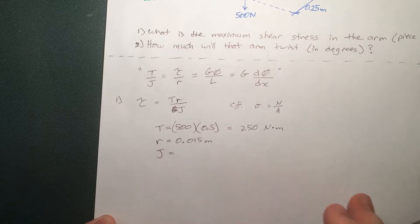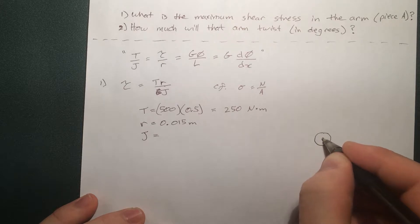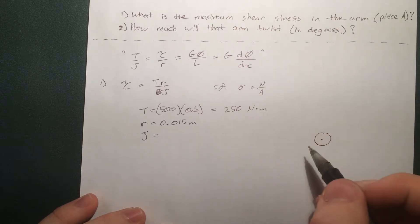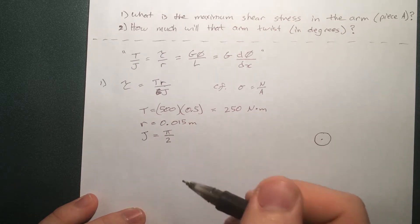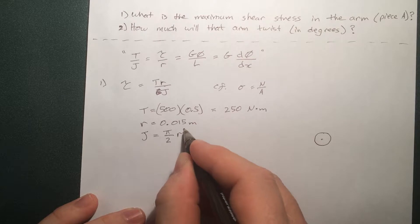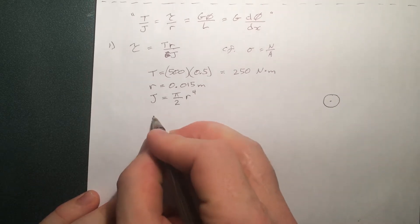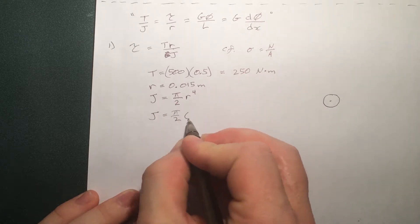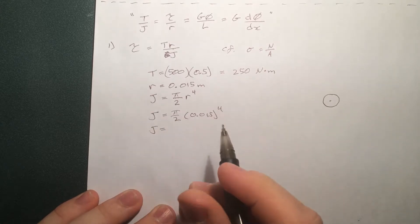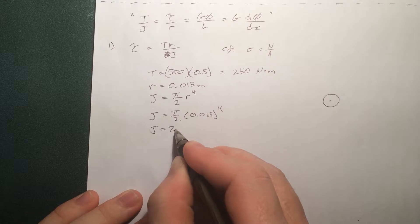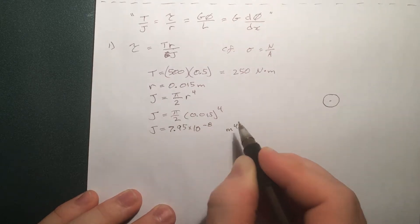Now J. This is the polar moment of inertia, so this is the moment of inertia about a rod, about the end, so how much it twists. And for any circular section, it's π/2 radius to the 4th. So this is a pretty easy calculation. We just plug in our radius. And it turns out J is equal to 7.95 times 10 to the minus 8 meters to the 4th.